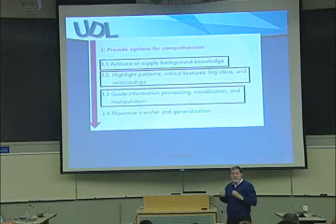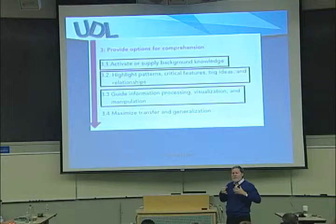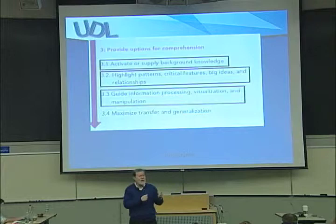Another thing on those guidelines is that in a UDL approach you highlight — make more obvious — the critical things: critical features, critical patterns, the big ideas. We highlight them so it's more accessible to see what the big idea is in all of this information. And lastly, I'm going to show guiding information processing — visualization — providing a little guidance: here's where to look, here's how you can process this.